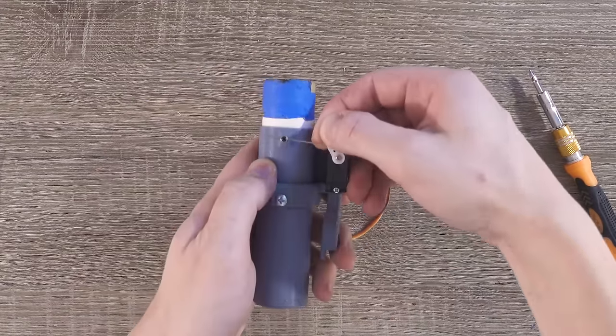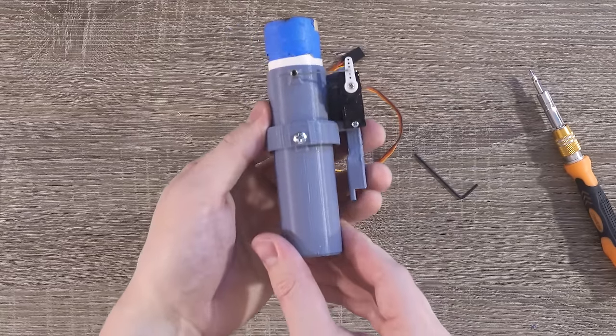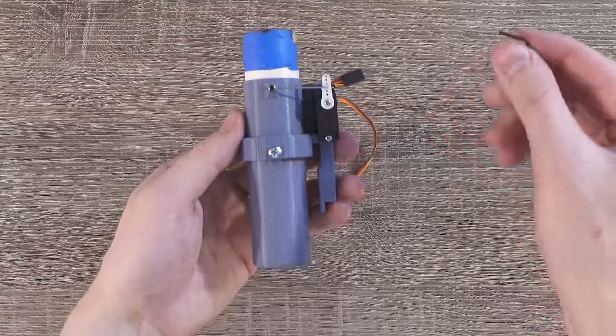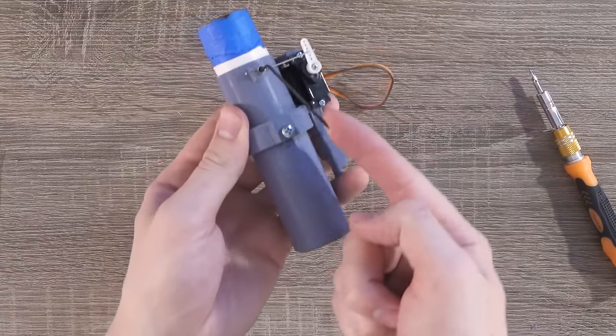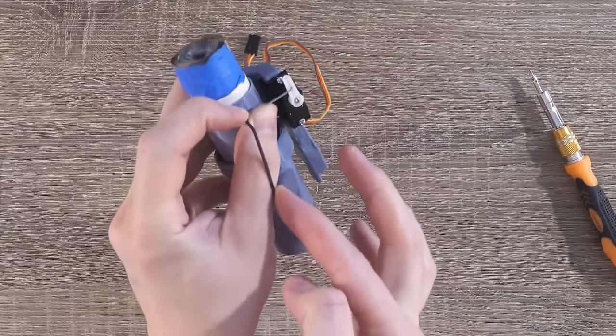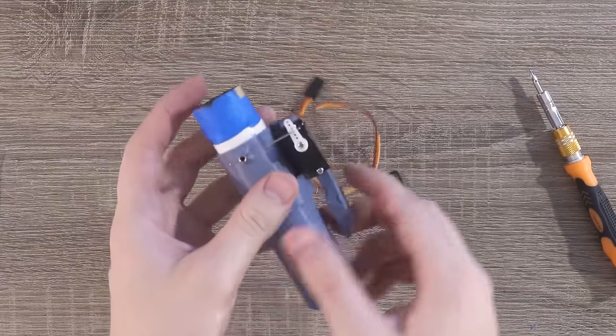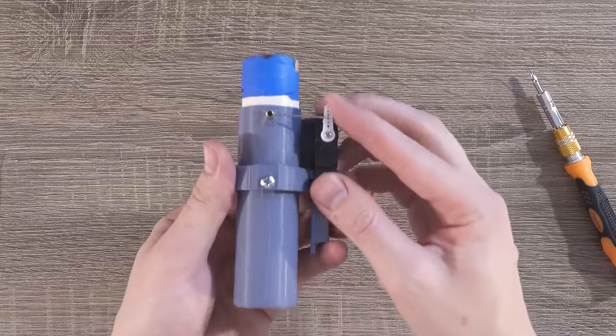Once again, straighten out the servo, and this time the motor mount too. Once they look pretty well aligned, tighten down the linkage stopper again, this time very tightly. The alignment between the two doesn't have to be perfect, we can fix this later, but make sure that the linkage stopper is very tight because we do not want this coming loose.